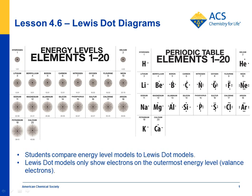The way Lewis dot structures work is that kids put a dot at 12 o'clock, 3 o'clock, 6 o'clock, 9 o'clock, and then another one here and another one here — so they're not evenly spread out. That is a convenient way of being able to show bonding in Lewis dot structures.